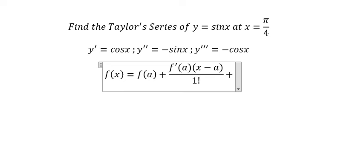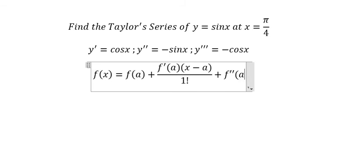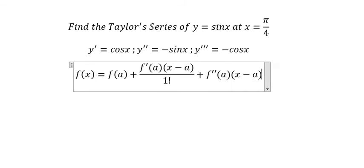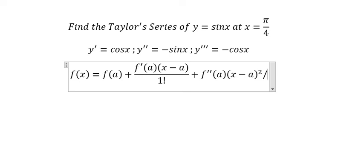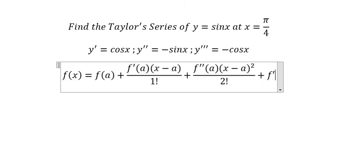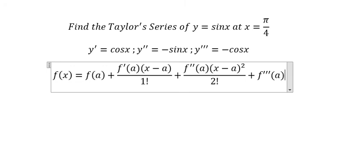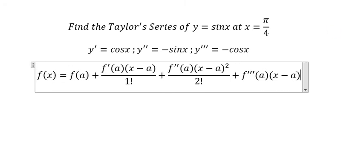Second derivative at x equals a, and we have x minus a to the power of two over two factorial, and we have third derivative of the function at x at a, x minus a to the power of three over three factorial.